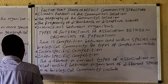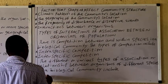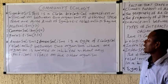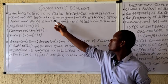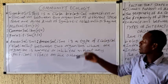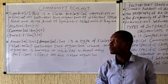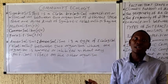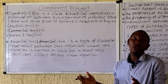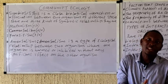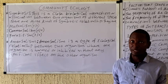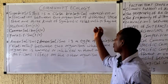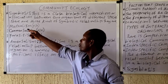Let's take a look at the various types of association present in a community. We have what we call symbiosis — a close biological interaction or association between two organisms of different species. In this case, one may benefit and the other is harmed, or both benefit, or one benefits while the other is unaffected.